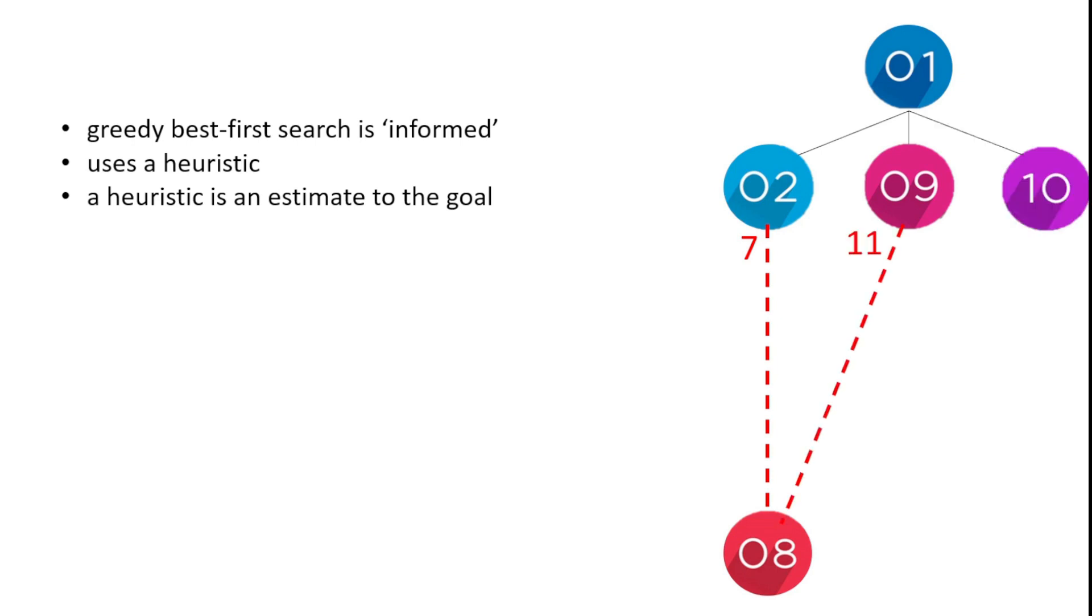So we're going to choose node 2. Now that has children: node 3 with an estimate of 5 and node 4 with an estimate of 3. So we're going to go 1, 2, 4.